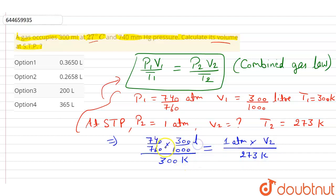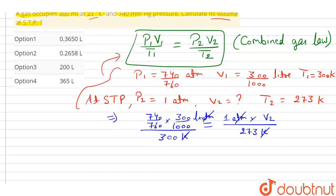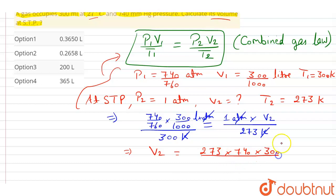The units on both sides are in litres, ATM and Kelvin. ATM will cancel out with ATM, and Kelvin will cancel out with Kelvin.